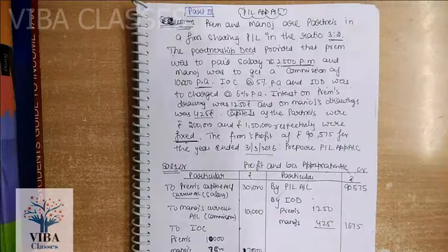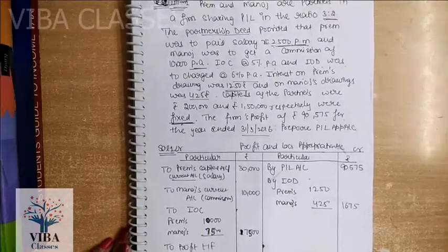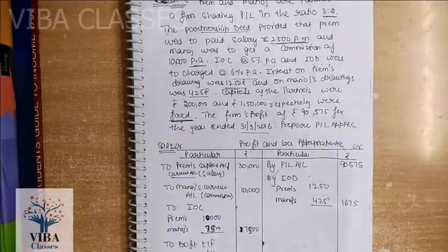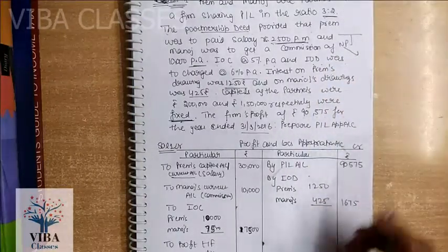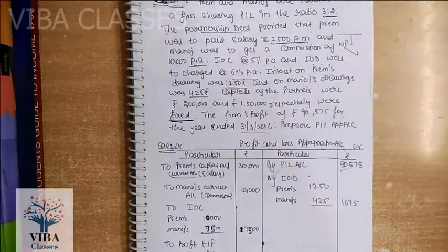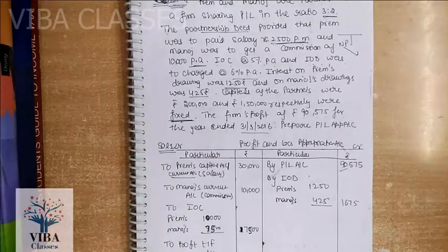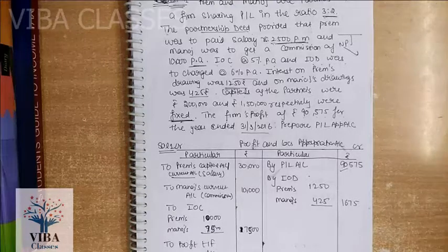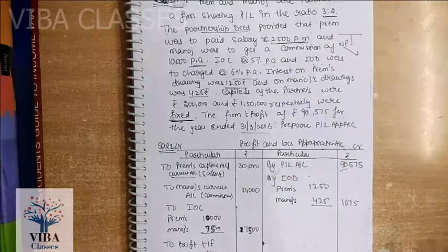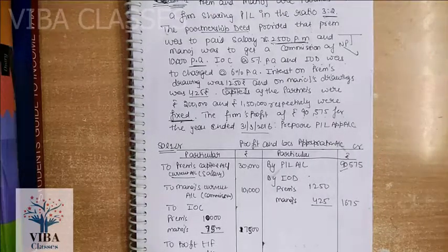The firm's profit for the year is Rs. 90,575 as of 31st March. Prepare the Profit and Loss Appropriation Account. P&L's net profit is on the debit side, so P&L's transfer is Rs. 90,575. The difference between P&L account and P&L Appropriation account: in P&L account you have items charged against profit, while in P&L Appropriation account you have appropriations against profit. In a loss case, we don't make a P&L Appropriation account, but distribute the loss to partners directly.